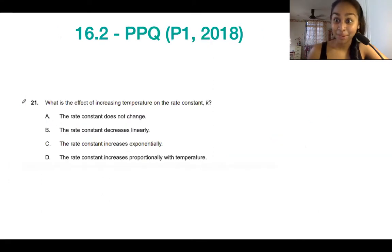So let's look at the kinds of questions that you can get asked about 16.2. So this question over here from the 2018 paper asks us about the effects of increasing temperature on the rate constant k. So remember I told you earlier that k changes with temperature exponentially, it increases exponentially with temperature. So 21 is going to be c.